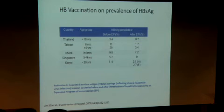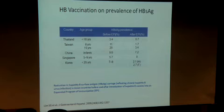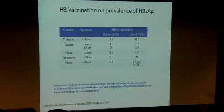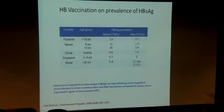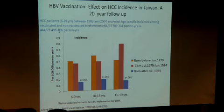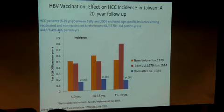Singapore has done very well. The incidence of Hepatitis B infection in people less than 10 years old is now 0%, meaning we will not see any more new chronic infections. Our current cases are those with pre-existing infection who are dying of it — as mentioned earlier, Hepatitis B is a dying disease in Singapore. In Taiwan, vaccination has also reduced hepatocellular carcinoma in children.